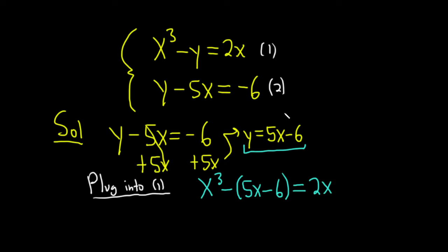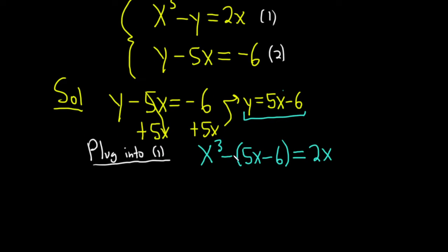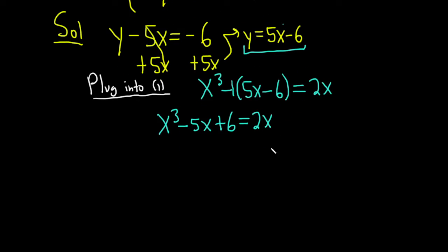Let's distribute. There's really an invisible negative 1 here. So this is x cubed minus 5x, negative 1 times negative 6 is a positive 6, and this equals 2x. Let's subtract 2x from both sides. So we have x cubed minus 7x plus 6 equals 0.